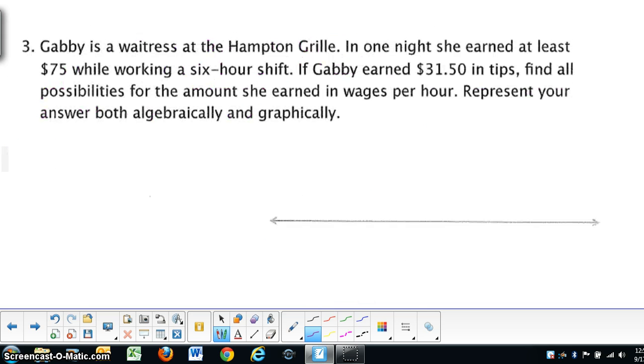Gabby is a waitress at Hampton Grill. And she earned at least $75 while working a six-hour shift. So again, just paraphrasing what this is saying. And she earned in tips, she's got $31.50. Find all possibilities for amount that she earned in wages per hour. Represent algebraically and graphically. Okay.